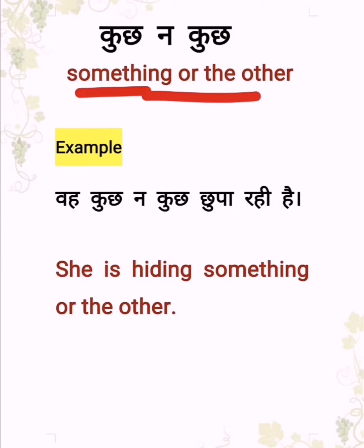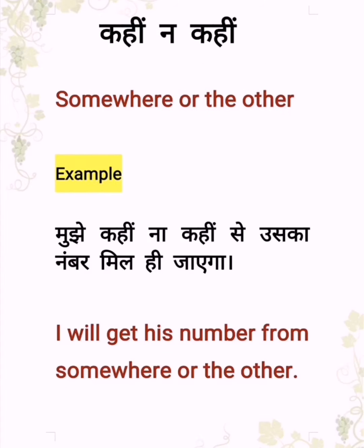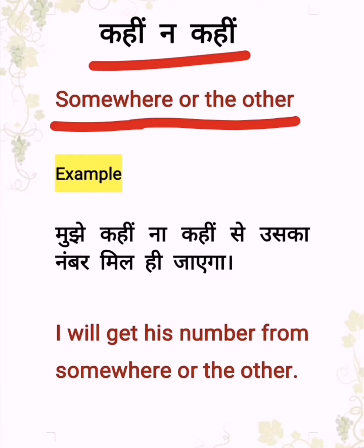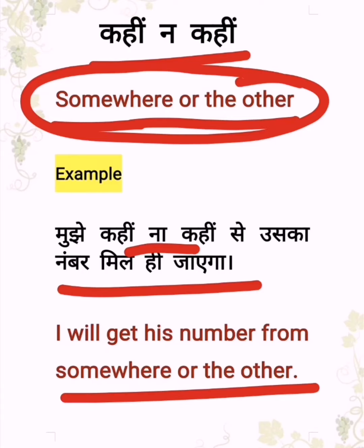'Kuch na kuch' (something or other) becomes 'something or the other.' 'Koi na koi' (someone or other) becomes 'someone or the other.' For example: 'She is hiding something or the other.' For 'kahi na kahi' (somewhere or other) we say 'somewhere or the other' — for example: 'I will get his number from somewhere or the other.'